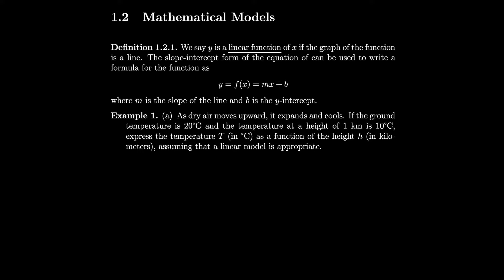Section 1.2, Mathematical Models. We say that y is a linear function of x if the graph of the function is a line. The slope-intercept formula can be used to write a formula for the function as y equals f of x, where y is mx plus b. Here m is the slope of the line and b is the y-intercept.